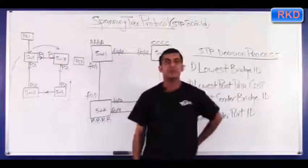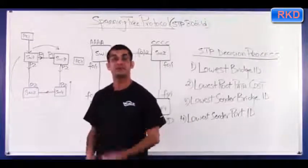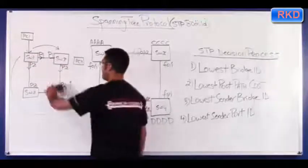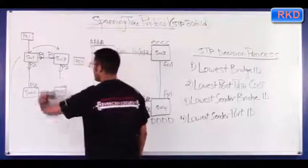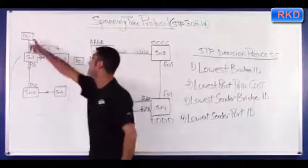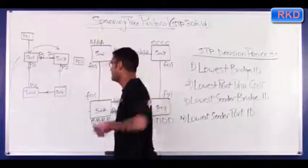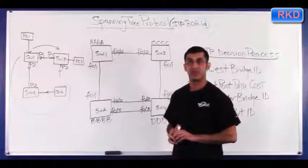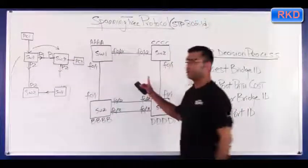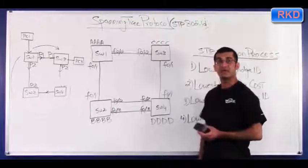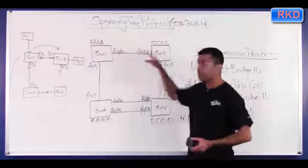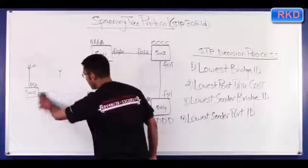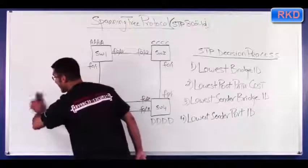To prevent this, spanning tree protocol shuts down redundant links between switches. So if this topology was running spanning tree, spanning tree would shut down one of these links. When that link is shut down, there is only one path between PC1 and PC3, assuming the remaining link is up and running, and there can't be any loops in this topology. Our end game with spanning tree is that some of these links are going to get shut down to prevent layer 2 loops from happening.